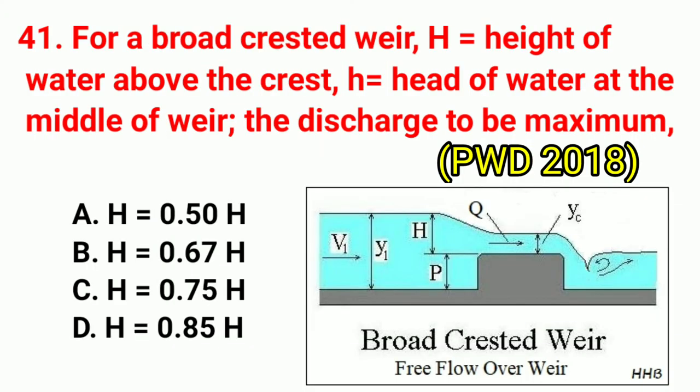Question No. 41. For a broad-crested weir, H equals height of water above the crest and h equals head of water at the middle of the weir. For discharge to be maximum, correct answer is option B: h = 0.67H.